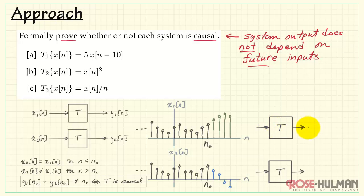We then apply these two different signals to the same system T to produce outputs y1 and y2. Now at time n0, all of the previous history of the system behavior is encapsulated in this one value. Now, if y1 of n0 depends only on inputs at time n0 or less, then we say that the system is causal.